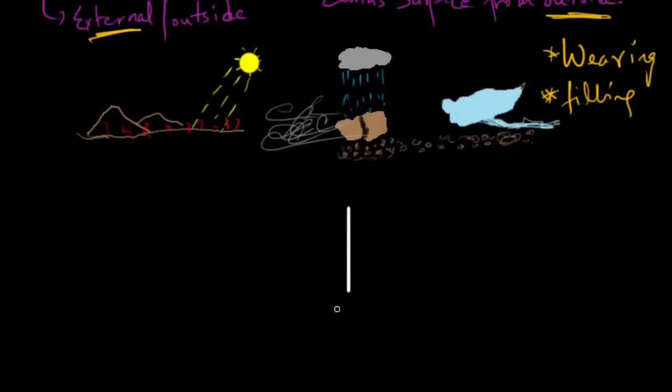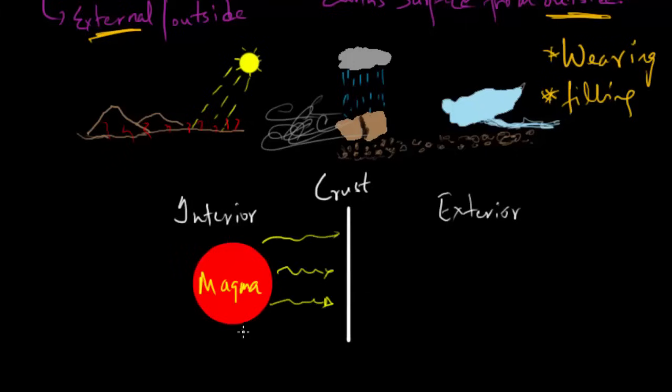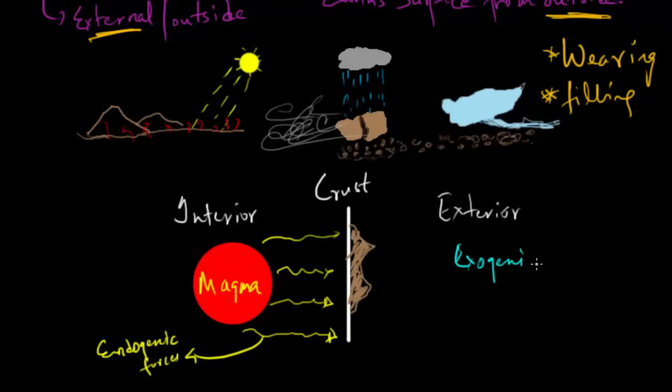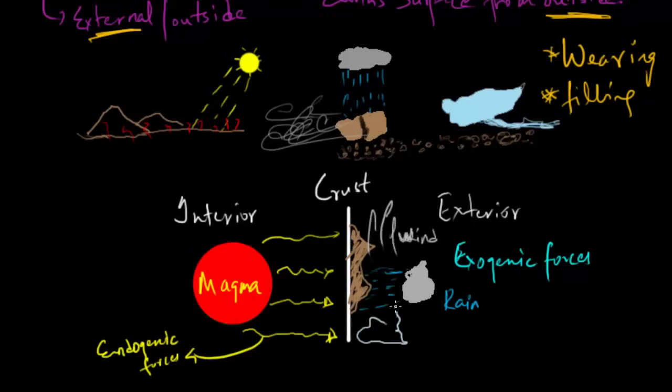Now I want you to imagine this line as the surface of the earth, that is the crust. When endogenic forces hit this layer, you can see the changes on the outside. Similarly, when exogenic forces hit this line, the changes that you saw due to endogenic forces get weathered down or simply reduce down. This keeps on happening at a different rate and pace.